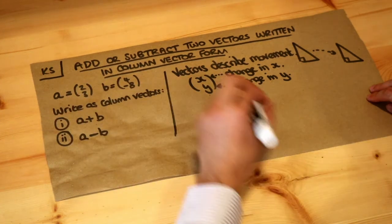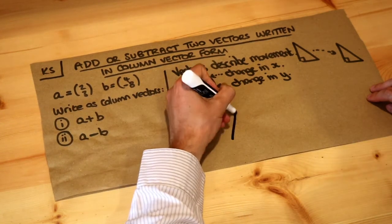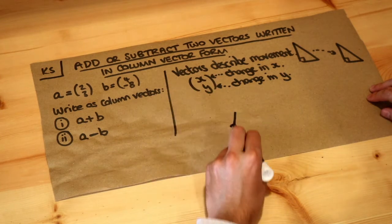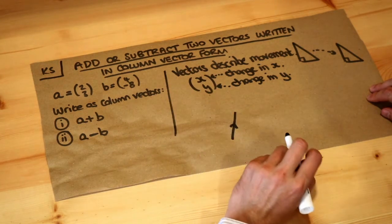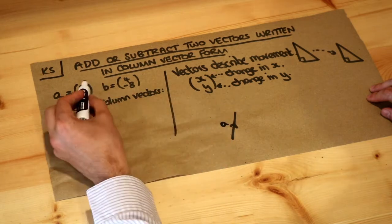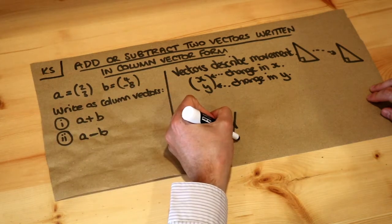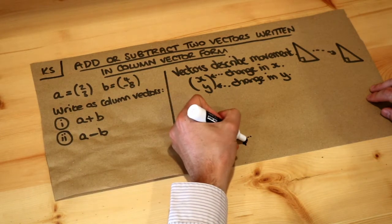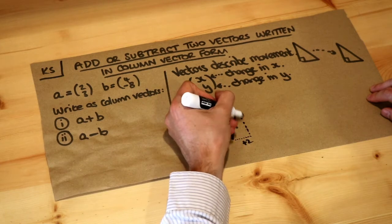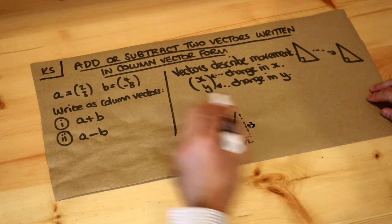So let's think about these two vectors. We've got a which is (2, 3) and a vector we could represent as a line with an arrow on it to indicate the direction. If this is a, (2, 3) means that the x value is increasing by 2 and the y value is increasing by 3.